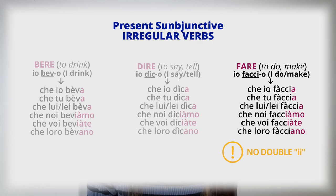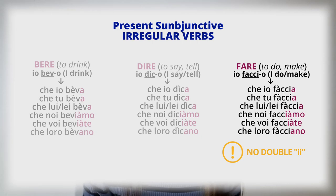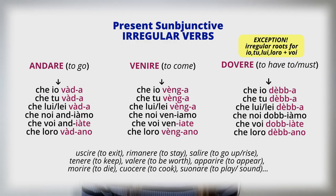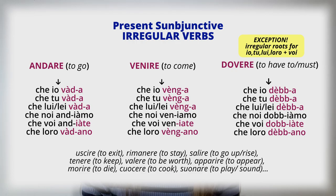Remember that roots ending in '-e,' like 'fare': che io faccia, che tu faccia, che lui faccia, che noi facciamo, che voi facciate, che loro facciano — never have a double 'i.' Some irregular verbs have an irregular root only for io, tu, lui/lei, and loro, but are regular in that the root is the same as the present indicative for 'noi' and 'voi,' like 'dovere': che io debba, che tu debba, che lui debba, che noi dobbiamo, che voi dobbiate, che loro debbano.